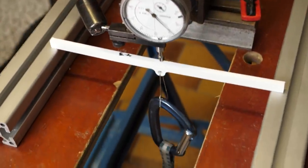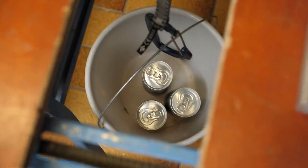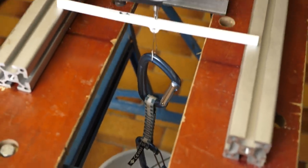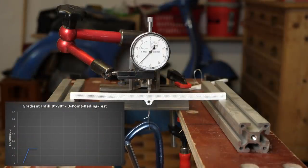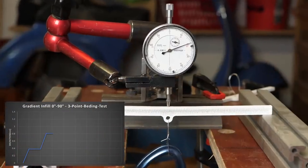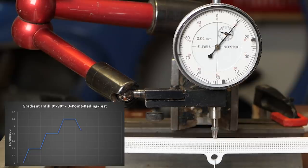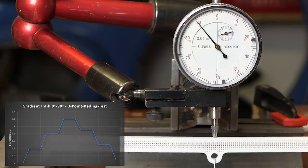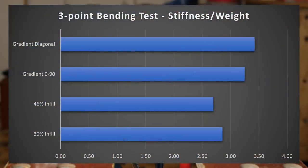For the 3-point bending test, I loaded them successively in the middle with calibrated soda cans and marked the displacements so that I can calculate the bending stiffness in the end.